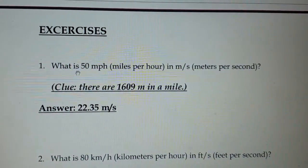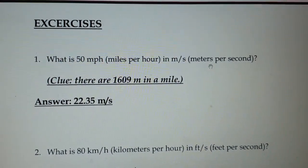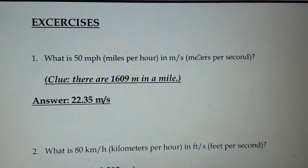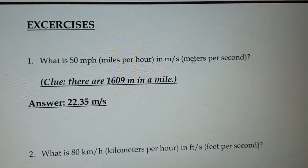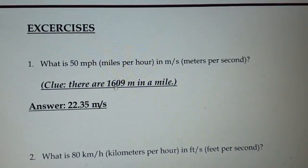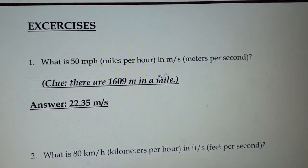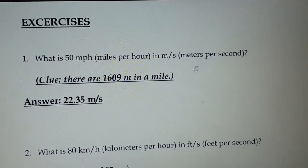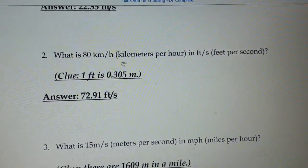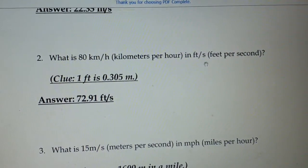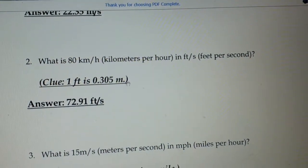There are some exercises for you to try. First: convert 50 miles per hour into meter per second. The relation given is one mile equals 1,609 meters, so you multiply by 1,609 since miles is bigger, and convert per hour into per second. Second exercise: convert kilometer per hour into feet per second, where one foot equals 0.305 meter.